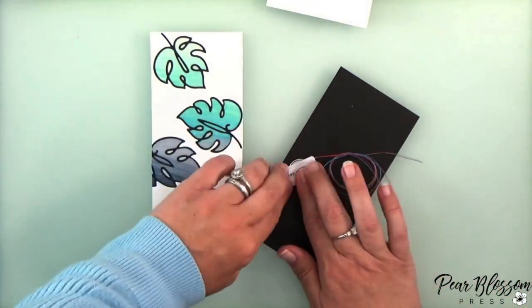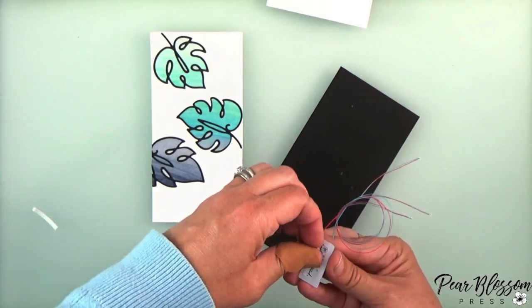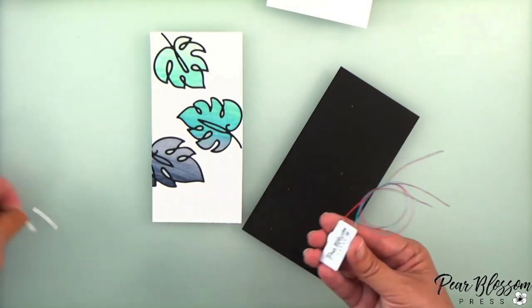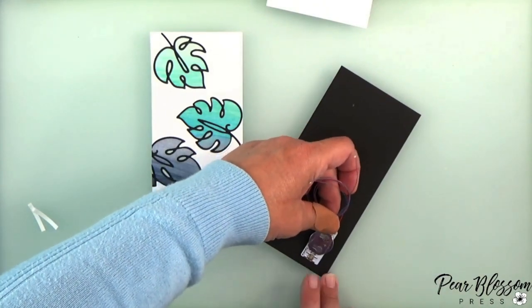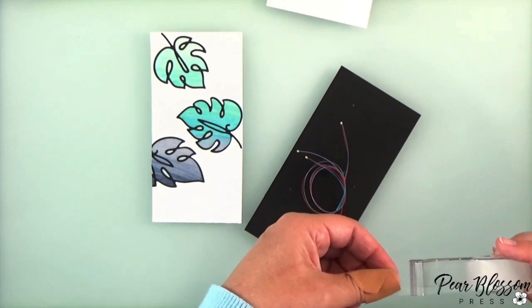So I'm just going to bring in some score tape. I had this really narrow stuff on my desk so I put two little strips of it. Probably one strip was fine. I'm just going to tape this down to the black piece and I'm lining up that button down at the bottom where my pencil mark was.